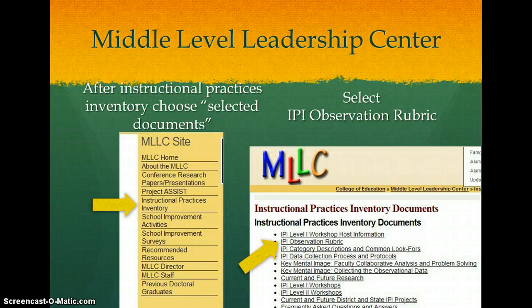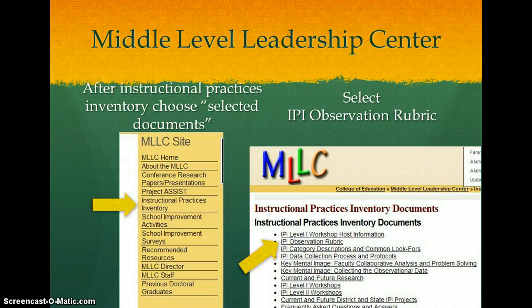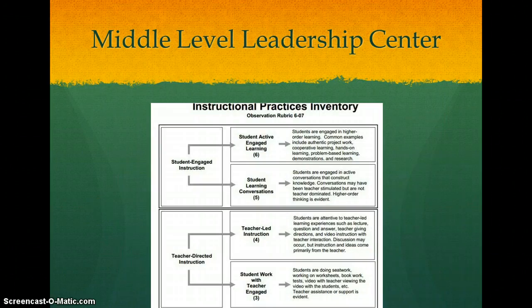After you've done that, select Go to Selected Documents. You'll get a list of documents, and the one I want you to look at is the IPI Observation Rubric. This is designed specifically for middle-level classrooms. Once you've done that, you will see the Instructional Practices Inventory. This is just the top part of it — you'll see the rest when you go to the website — but it's all about engagement.